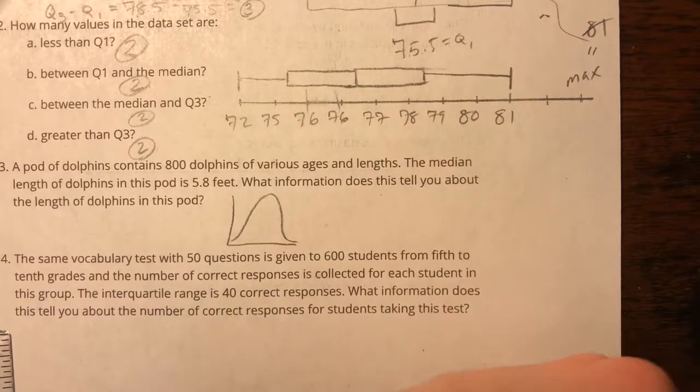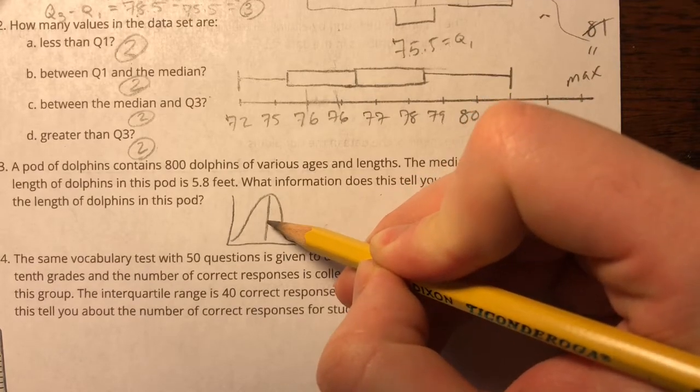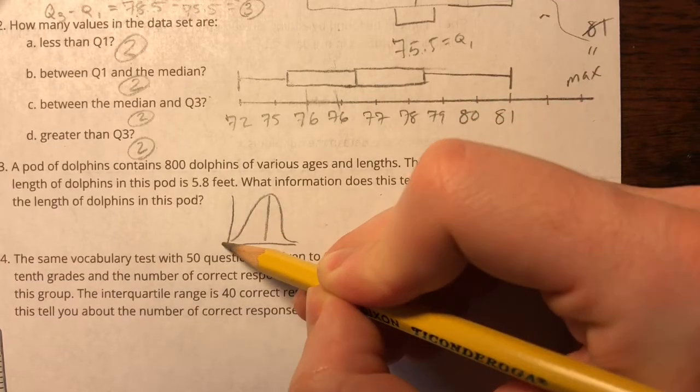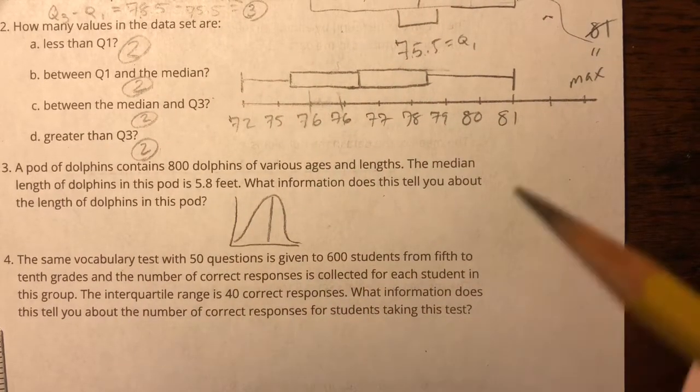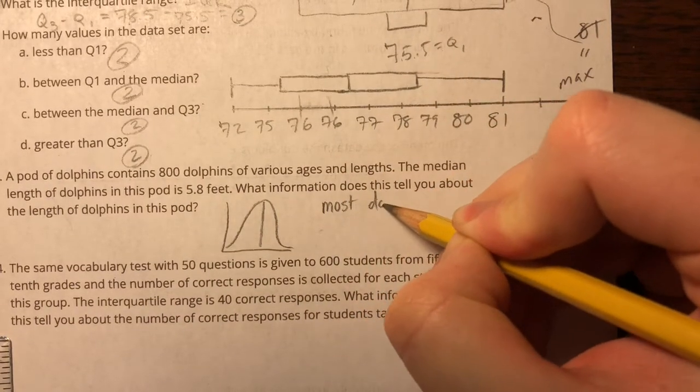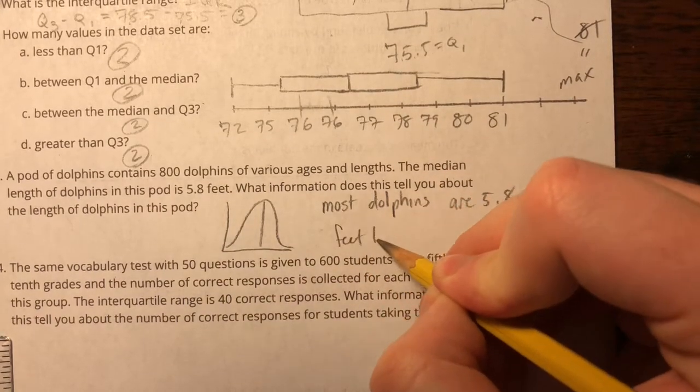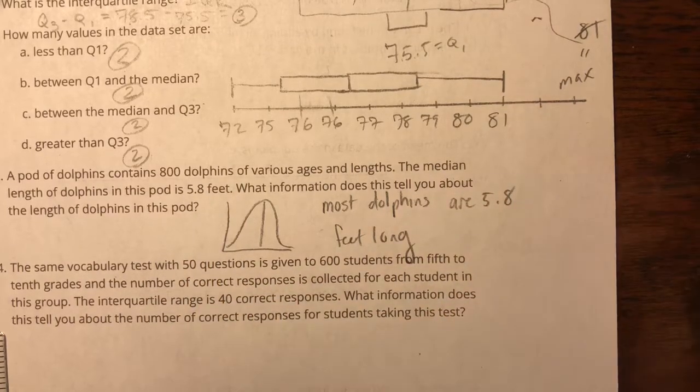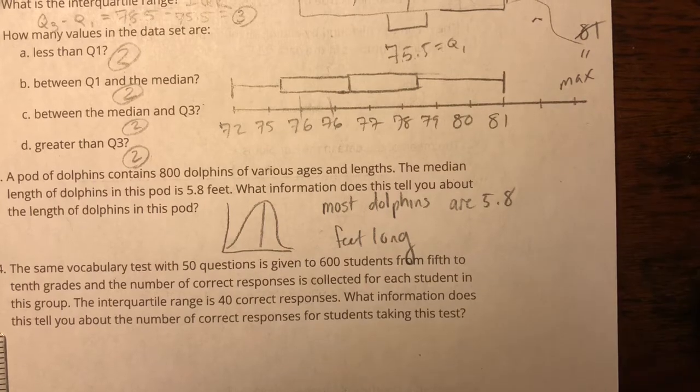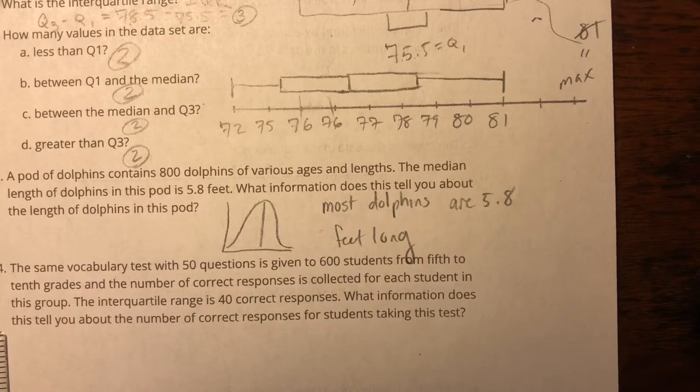that's probably going to follow what we call a bell curve. Bell curve is normally how things in life tend to fall. Like, I always use this example, you know, if this was height, this would be average height. Some people are a little bit taller, some people are smaller, but most people are around average height. So if I know that this median is 5.8 feet, I can say that most dolphins are 5.8 feet long. They checked 800 dolphins. That's a lot. It's not like they just went out into the ocean, found one dolphin and said, Oh, he's 5.8 feet. They did considerable surveying. So I'd say that's a pretty reasonable number to say that they're 5.8 feet.